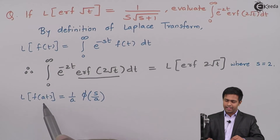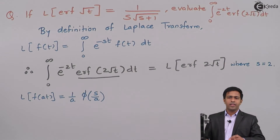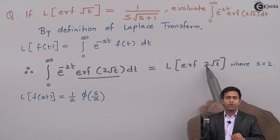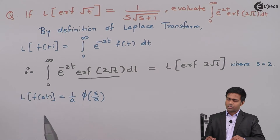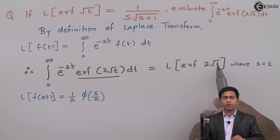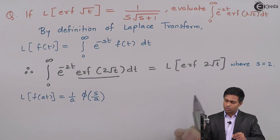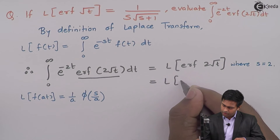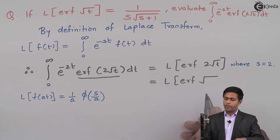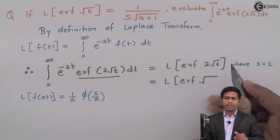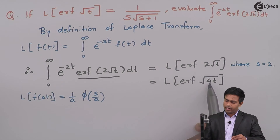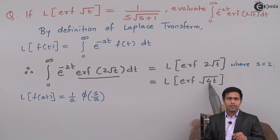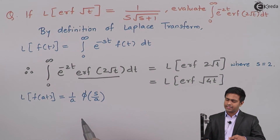But a is not 2, because 2 is the coefficient of root t and according to the property we want a to be the coefficient of t. So I need to take this 2 inside the root so that it becomes the coefficient of t. It is equal to Laplace of error function of root of — when I take 2 inside the square root, I square the number, so that becomes 4t. If you take root of 4t it is 2 root t as before, and now 4 is the coefficient of t and hence a equals 4.